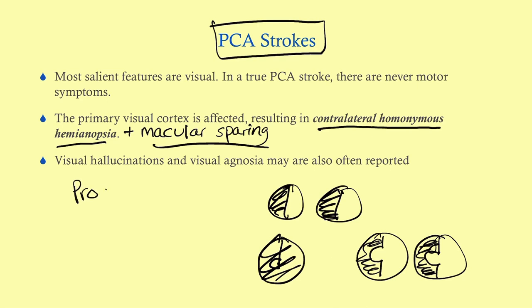One form of visual agnosia is prosopagnosia — difficulty recognizing faces. For example, after a PCA stroke, a patient's wife brings him to the ER; he can see her but can't recognize who she is. When she starts talking, he recognizes her voice, but not her face. That is prosopagnosia. There's also general visual agnosia where patients can't recognize objects — they can describe an orange as round and orange-colored but can't identify what it is. They can see, but they cannot recognize.